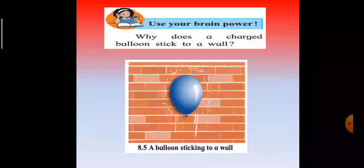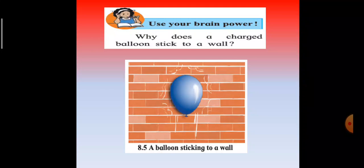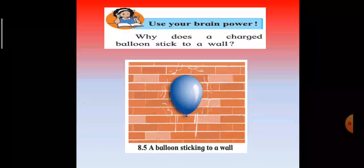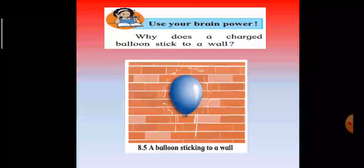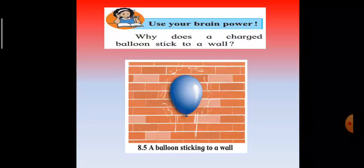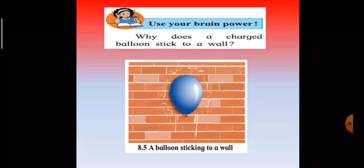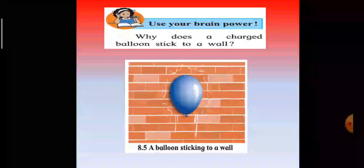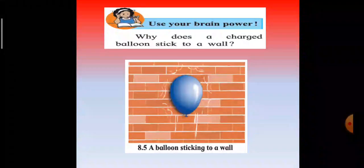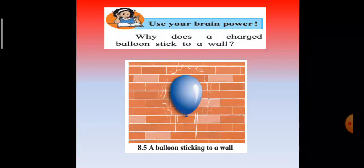Why does a charged balloon stick to a wall? The charged balloon, when taken near the wall, there is induction. On the portion of the wall where the balloon is held, opposite electric charges develop. The attraction between charges on the balloon and the wall cause sticking of the balloon to a wall.